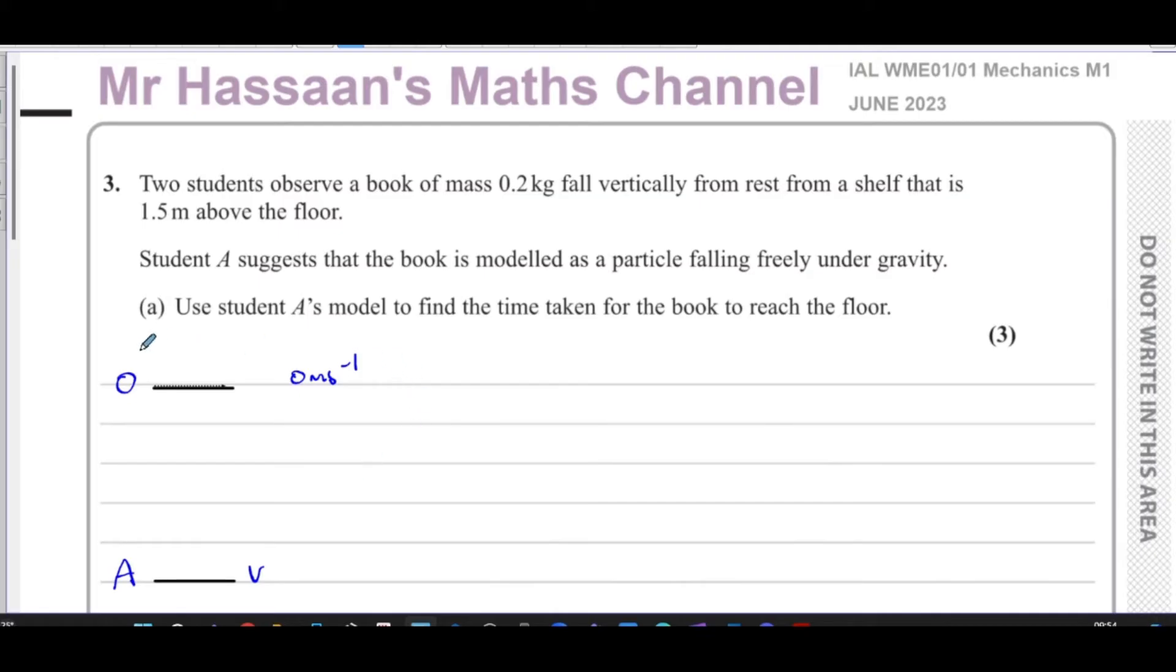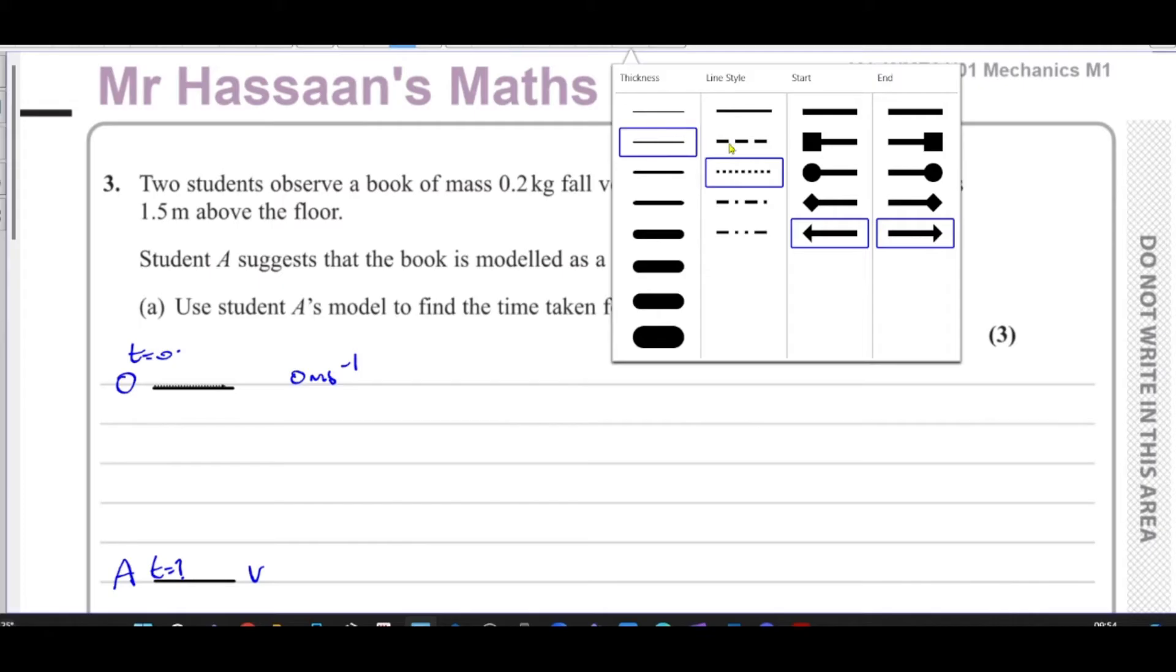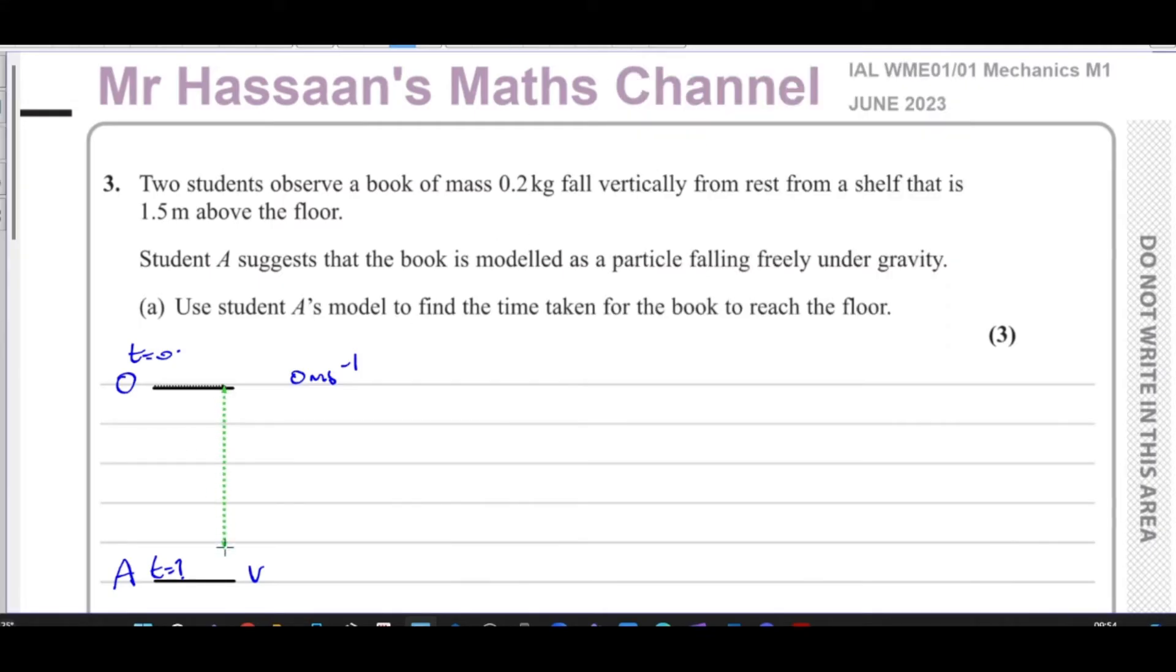And this is when time equals zero, and we have to find the time that is over here. What else do we know? That the distance is fallen through is 1.5 meters. So this distance is 1.5 meters. We know that it's falling freely under gravity, so it's accelerating towards the ground with g as its acceleration, which we're going to take is 9.8.